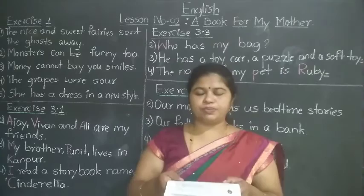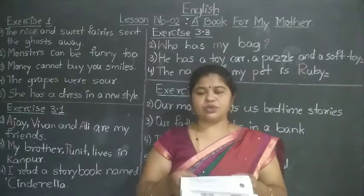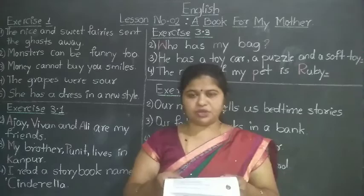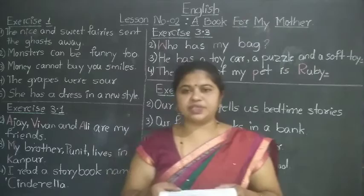Our favourite fruits are blueberry, apple, cherry and lemon. There is a list of words, so after blueberry put a comma, after apple put a comma. At the end of the sentence put a full stop. Hope you completed this exercise, children.